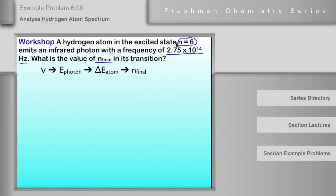A hydrogen atom in the excited state, n is equal to 6, emits an infrared photon with a frequency of 2.75 times 10 to the 14th hertz. What is the value of n final? This is n initial up here, we're asked to find n final.